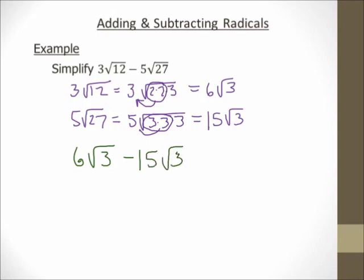Before I combine these, I need to make sure they are like radicals — same index and same radicand. They do have the same index; both roots are 2. They have the same radicand; they're both 3. So I can combine them. 6 square root of 3 minus 15 square root of 3 equals negative 9 square root of 3. There's my final answer.